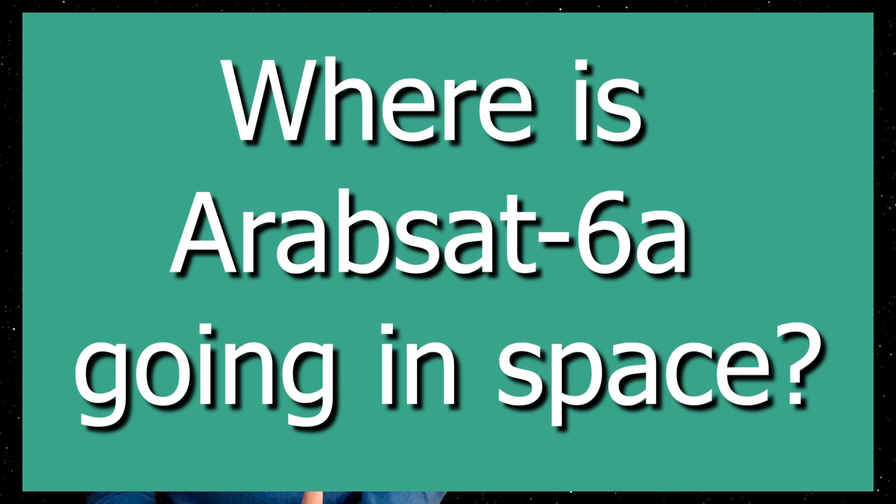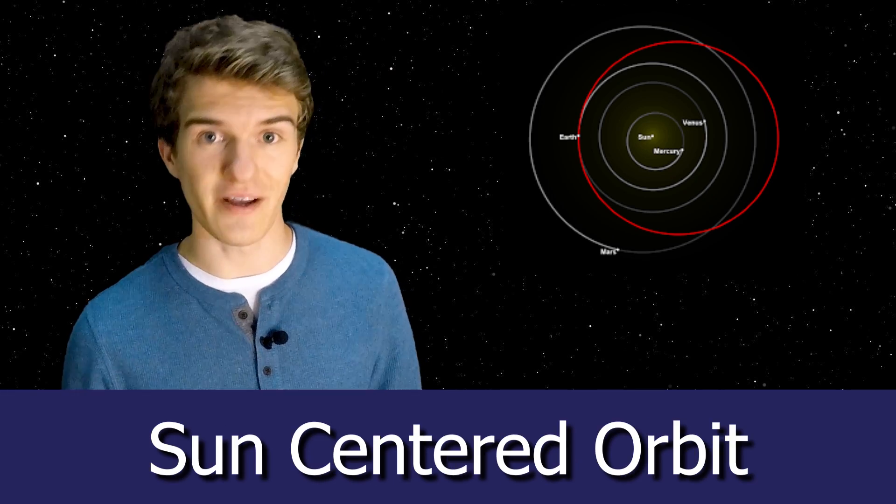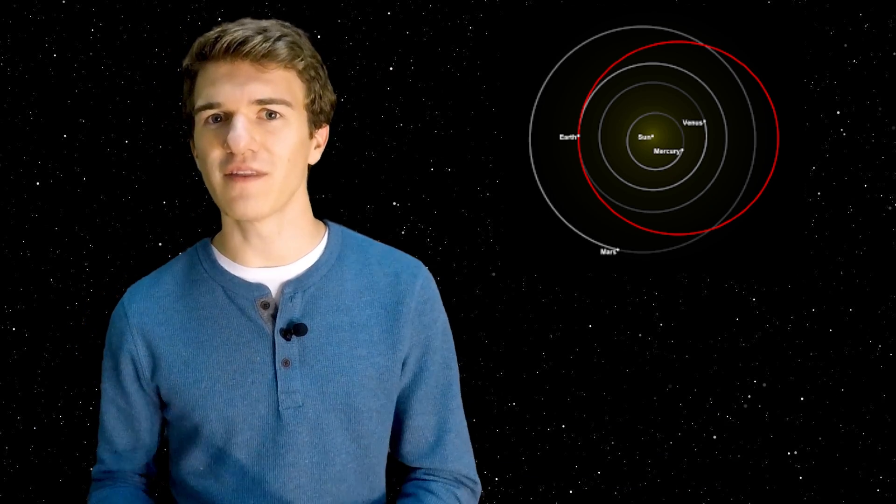This leads us to the question of where exactly is Arabsat 6A going. Most other satellites don't need a Falcon Heavy to get into orbit, so why is this one so unique? To understand this, we should look back to the Tesla Roadster and the very first Falcon Heavy launch. It had enough energy to leave Earth's orbit and go into a heliocentric orbit, meaning a sun-centered orbit. But Arabsat 6A is going far away from Earth without leaving Earth's gravitational pull. It's going to a special orbit called a geostationary orbit.